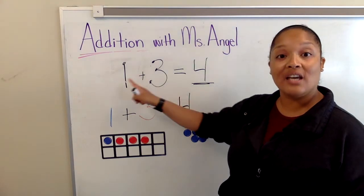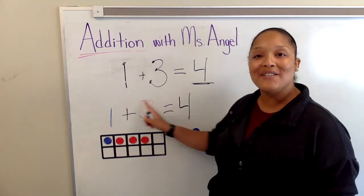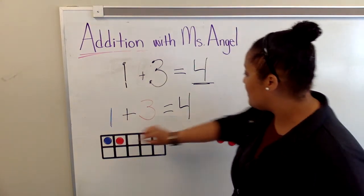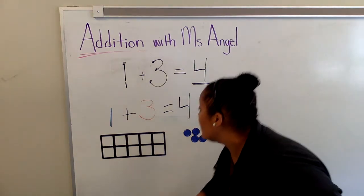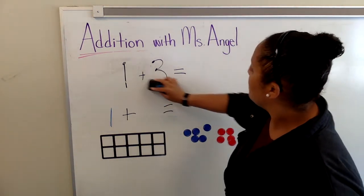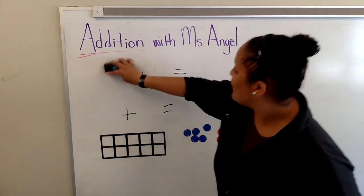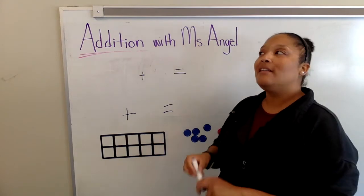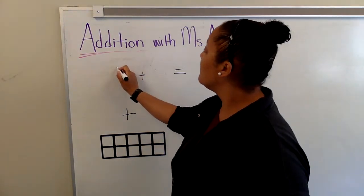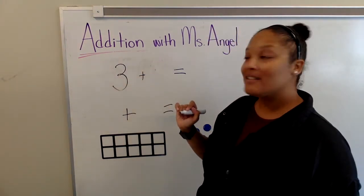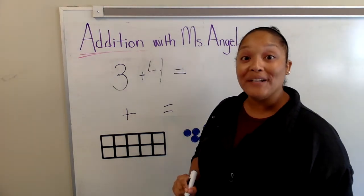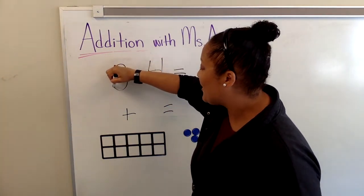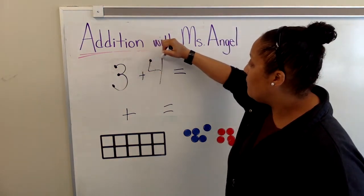You just added one plus three using the touch math strategy and the tens frame strategy. Should we try another equation? Let's clean our dots and erase our numbers. Now we are ready to do another equation. Let's add three plus four. I'm going to add the touch points — here are three circles and now I need four circles.